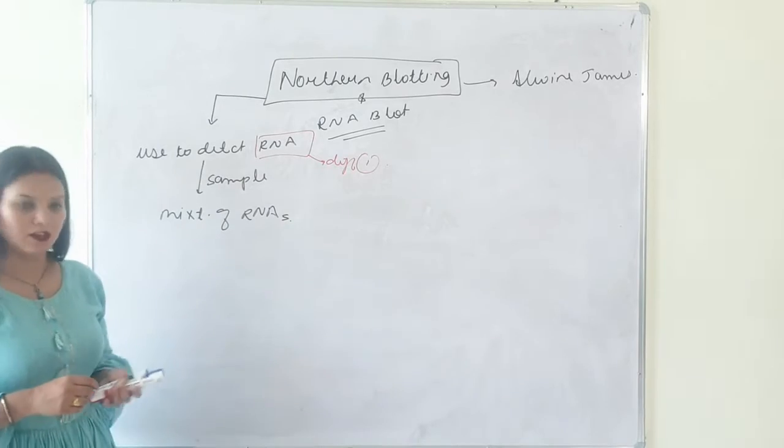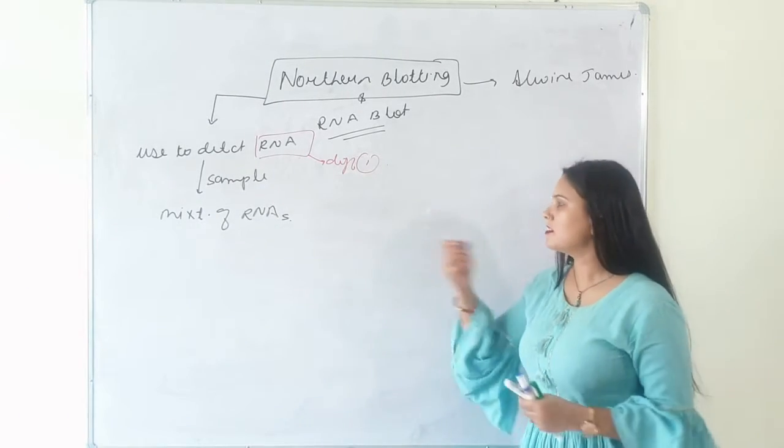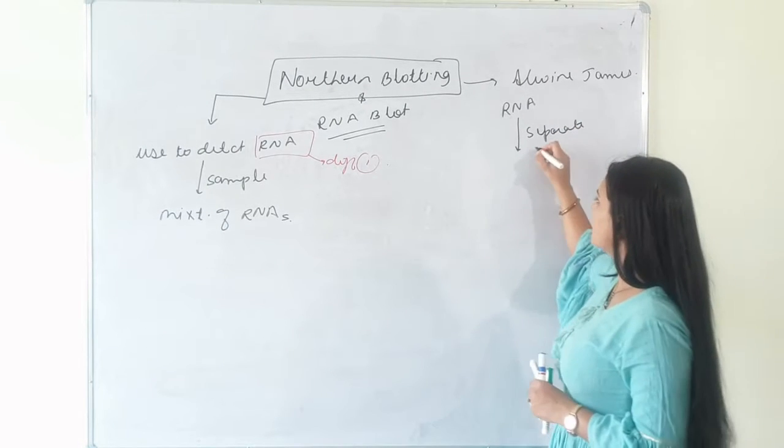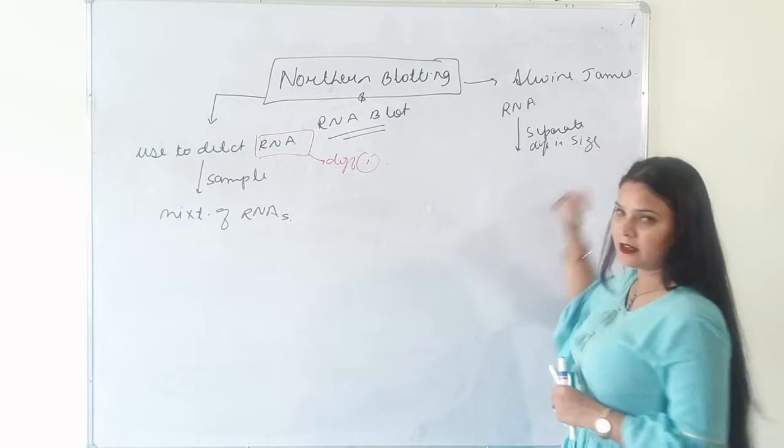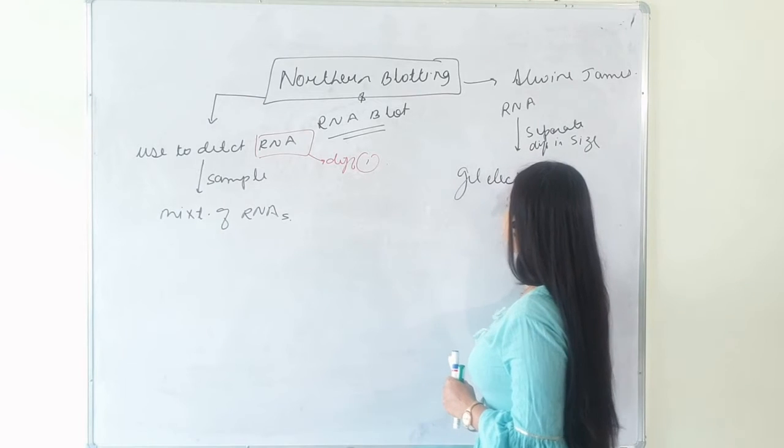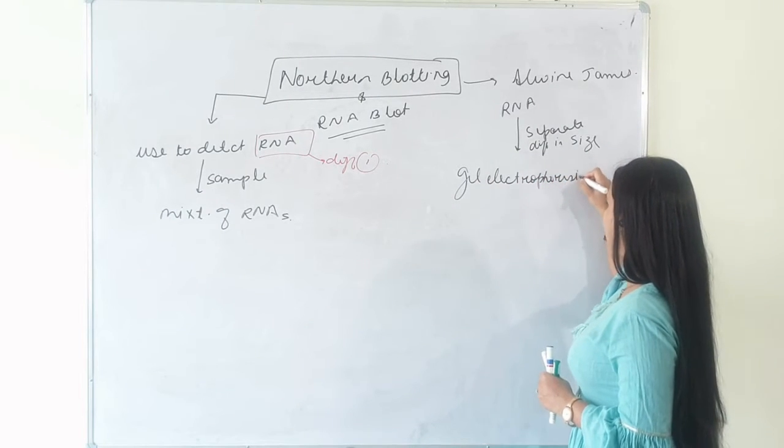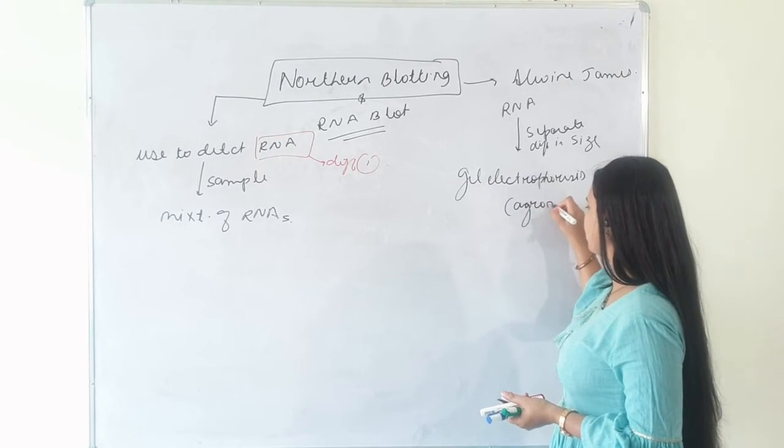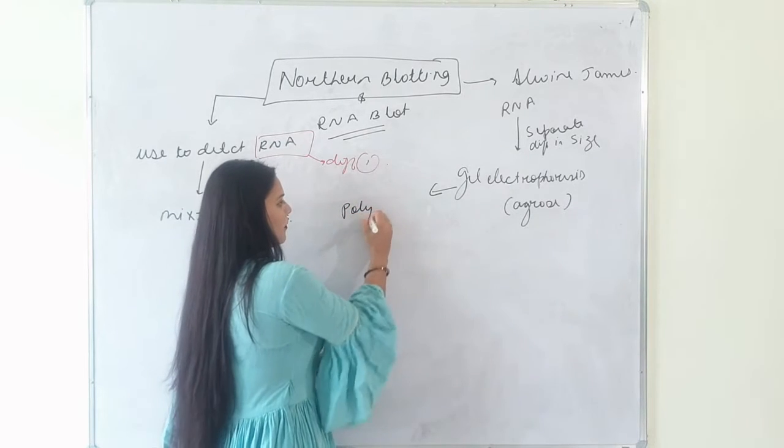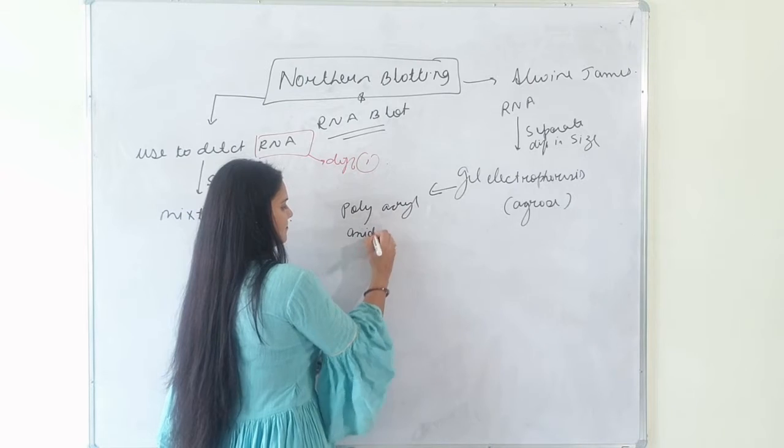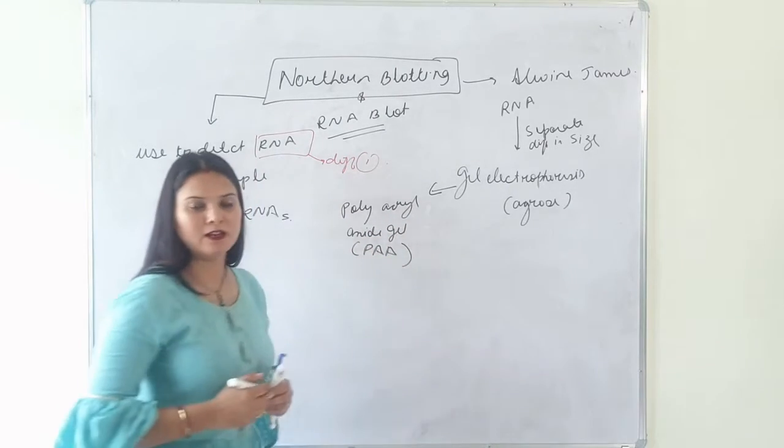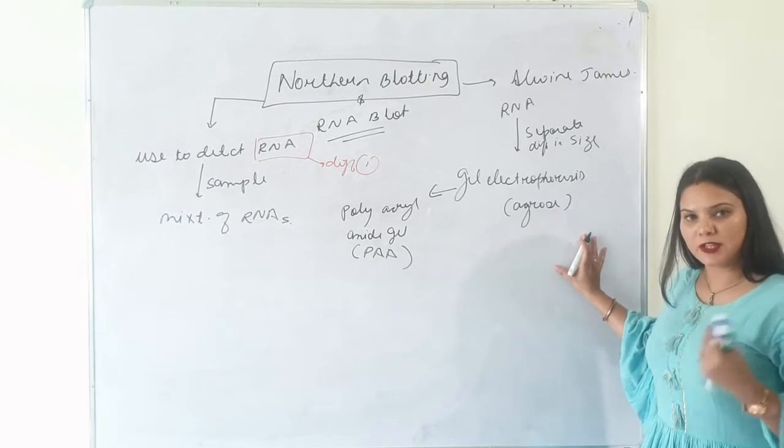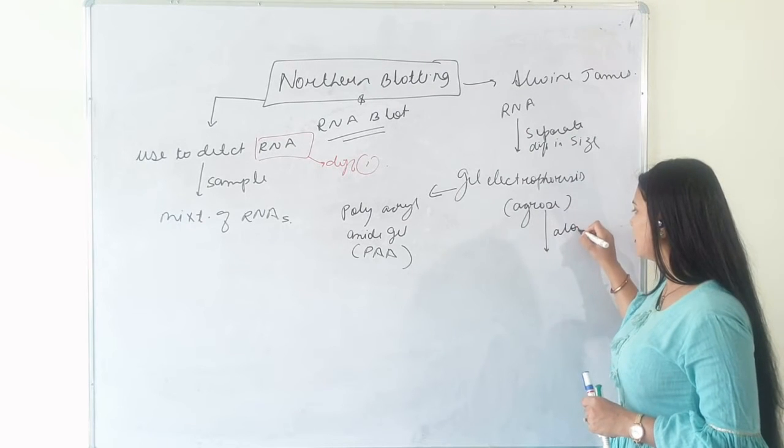Going on to the protocol of northern blotting, same as that of southern blotting, first of all, we need to separate RNA according to their differences in size of fragment by gel electrophoresis. We already know that in electrophoresis, we use two types of gel. One is agarose gel and another one is polyacrylamide gel, also called as PAA gel. In gel electrophoresis here, along with agarose gel, we use this along with denaturing agent.